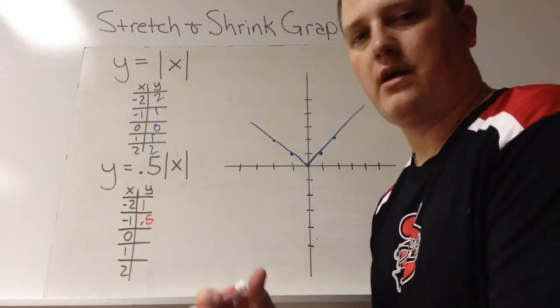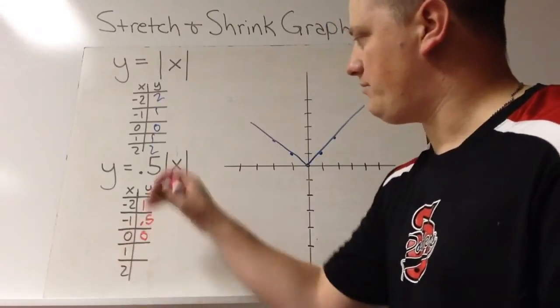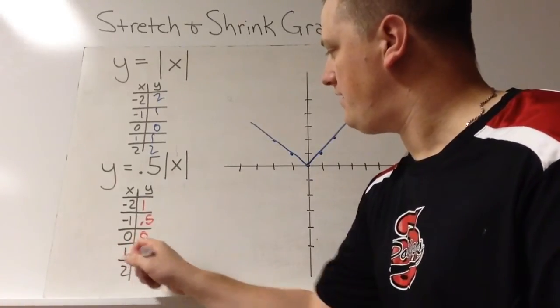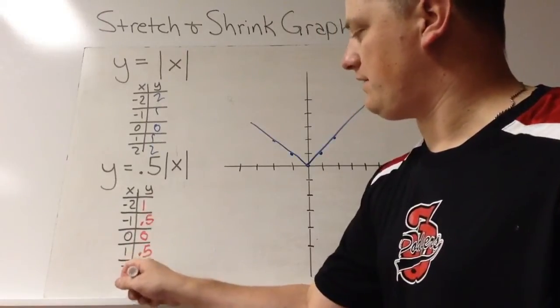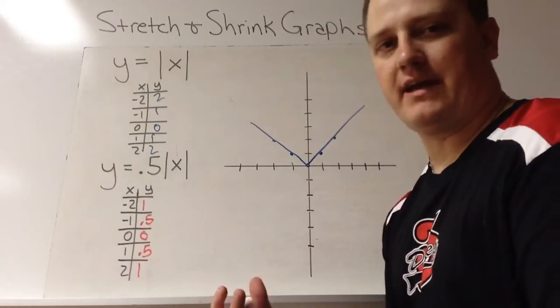Absolute value of 0 is 0, times 0.5 is still 0. Absolute value of 1 is 1, times 0.5 is 0.5. Looks like a pattern here. I'm going to guess that that's 1 also. You can go through the math if you want. So now I've got to graph these.